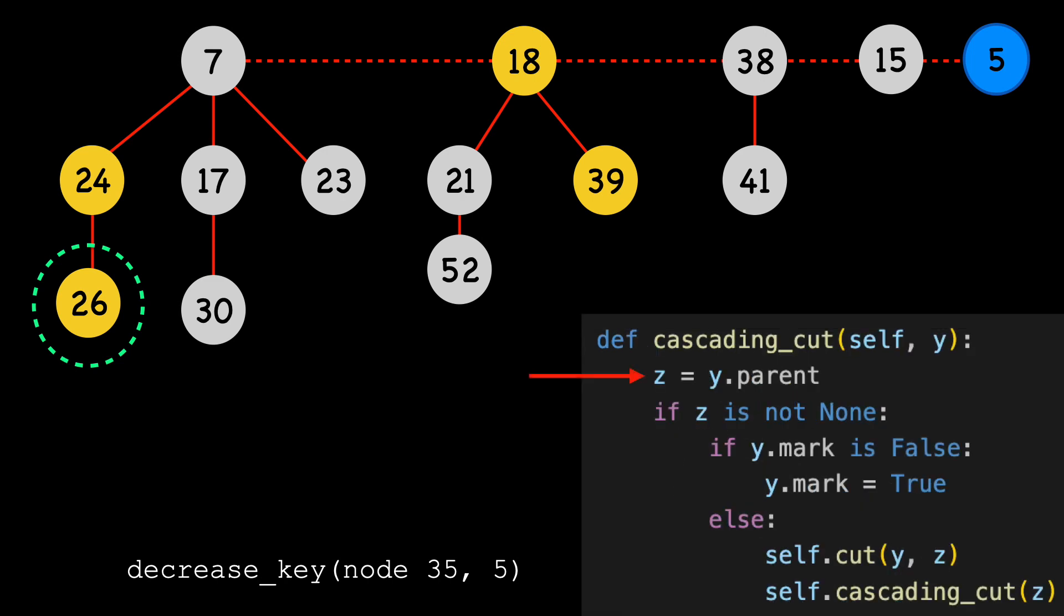First, we set Z, which we'll indicate by a purple circle. We can see that Z is not none, and also that Y is marked. So, we cut Y, again moving it to the end of the root list.